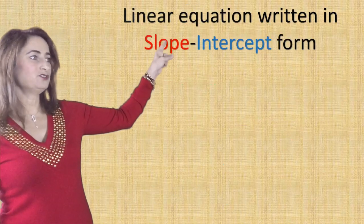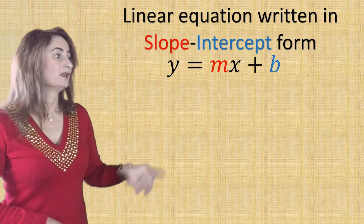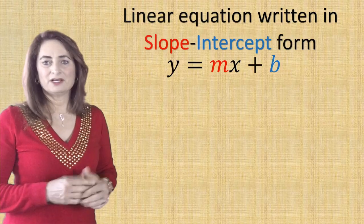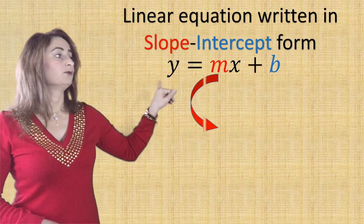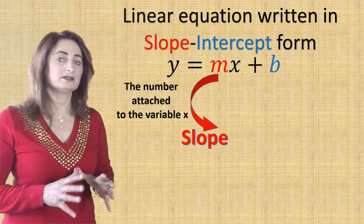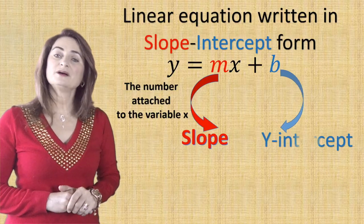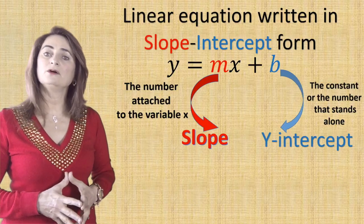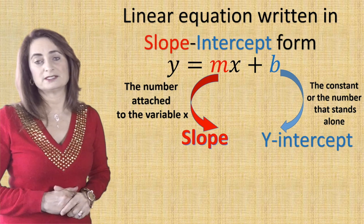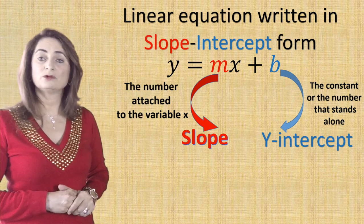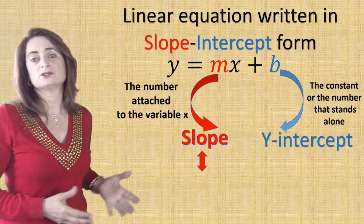Now that we have y equals mx plus b, written in slope-intercept form, let's discuss it. Y is isolated by itself — that's how I know it's in slope-intercept form. M is the slope, which is the number attached to the variable x. B is the y-intercept, the number that stands alone — the constant. We use rise over run when graphing the slope.